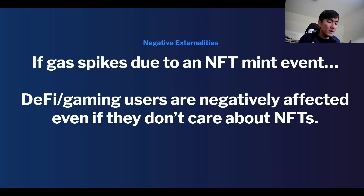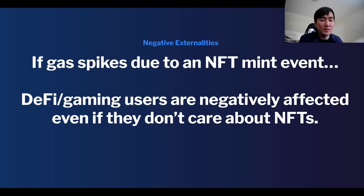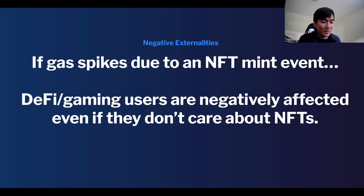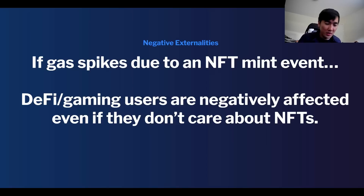If you're minting an NFT you might be inelastic — your demand for paying gas is inelastic because you just want to mint. However, if gas spikes due to an NFT mint, it creates problems for DeFi users. If they're trying to farm on Ethereum and gas is spiked high for three hours, they have to wait four or five hours to farm. Similarly, if you're playing a game on Ethereum, you don't care about NFT mints or DeFi dgens getting liquidated and spamming transactions — you just want to play the game.